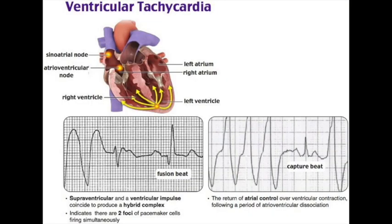Ventricular tachycardia (VTAC): three or more consecutive PVCs at over 100 bpm, usually 120-300 bpm. Classified as sustained (over 30 seconds) or non-sustained (under 30 seconds), and monomorphic (same QRS morphology) or polymorphic (varying morphologies). Torsades de pointes is a variant of polymorphic VTAC with waxing and waning QRS amplitude on EKG. Etiologies: underlying heart disease — ischemic heart disease (most common), post-MI, structural defects, cardiomyopathies with prolonged QT, electrolyte abnormalities (especially hypomagnesemia, hypokalemia, hypocalcemia), and digoxin toxicity.